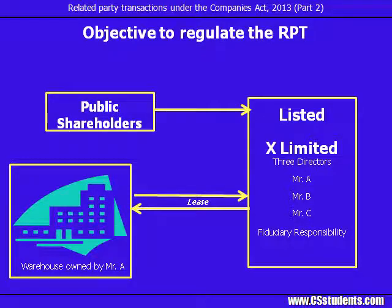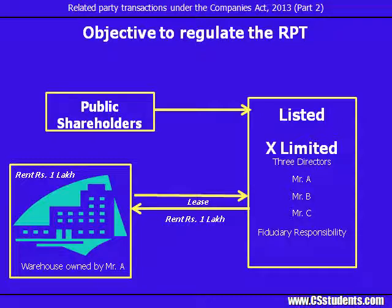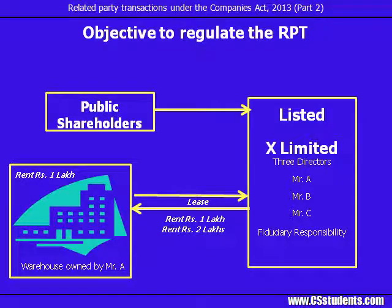In our example, if the market rent for the similar warehouse is Rs 1 lakh per month and X Limited also proposes to pay Rs 1 lakh per month to Mr A, there is no undue benefit to Mr A. But if X Limited pays monthly rent of Rs 2 lakhs, then it's an unreasonable case and the director is benefiting at the cost of other shareholders. So we regulate the transaction with certain approvals and disclosures.